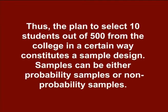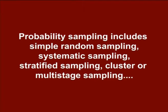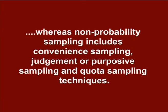Samples can be either probability samples or non-probability samples. With probability samples, every unit in the population has an equal chance of being selected and probability can be accurately determined, but non-probability samples do not allow the researcher to determine this probability. Probability sampling includes simple random sampling, systematic sampling, stratified sampling, cluster or multistage sampling, whereas non-probability sampling includes convenience sampling, judgment or purposive sampling, and quota sampling techniques.